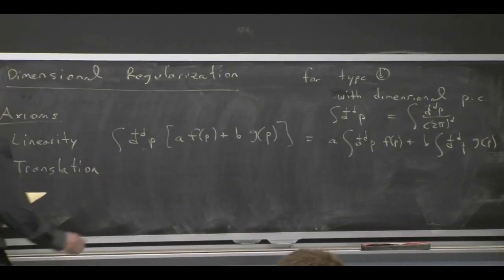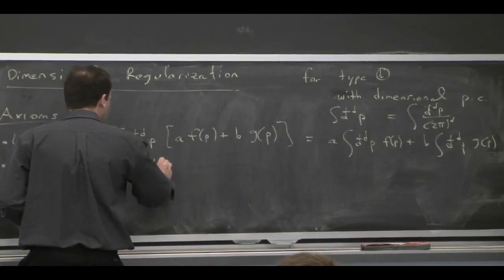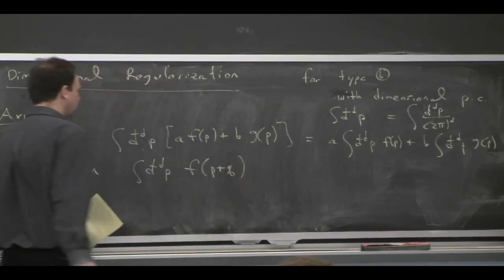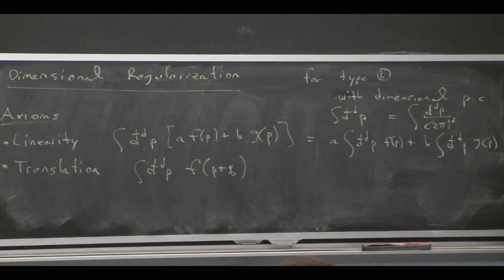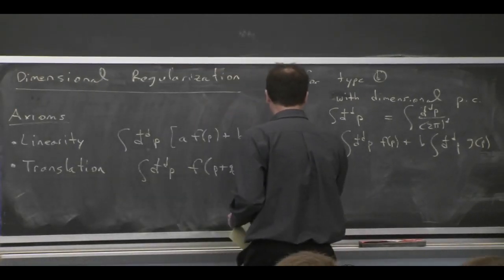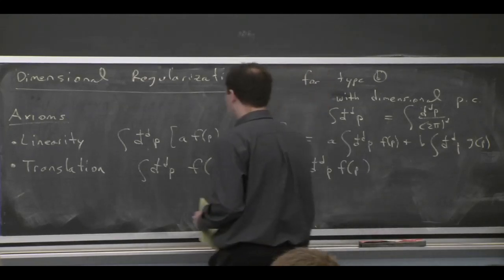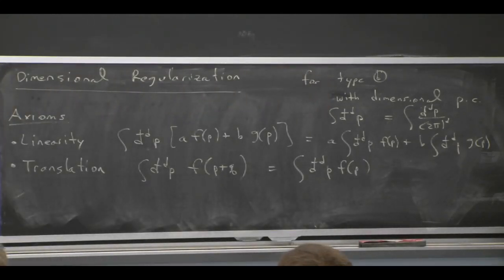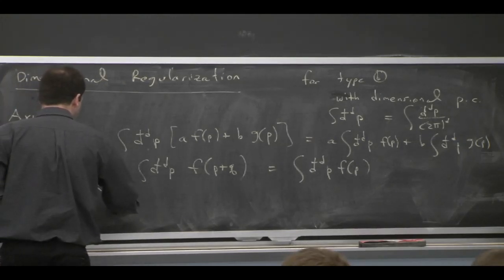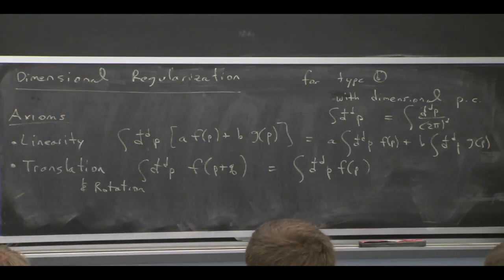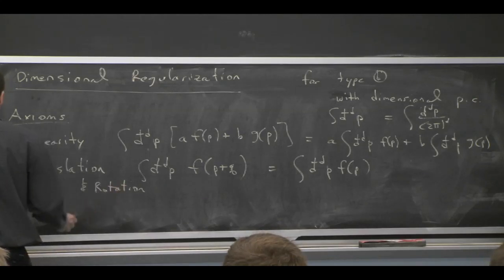The second one is translations, which is more restricting. That says if you have some integral over f, but it's a function of p plus q, q is some external momentum, I can always shift away the q. Just p goes to p minus q, and then I just have an integral over p. And along with translations, you can think about having rotations. My whole notation is covariant, so we won't worry so much about rotations in the Lorentz group.